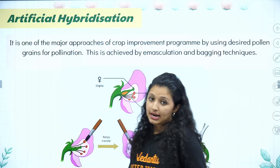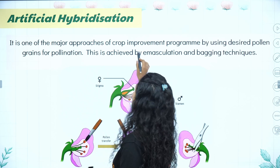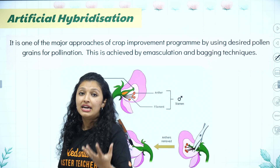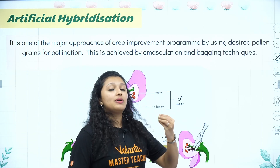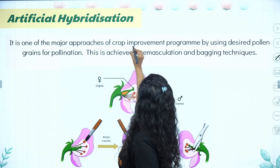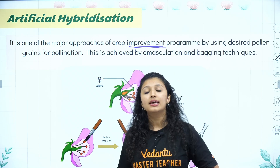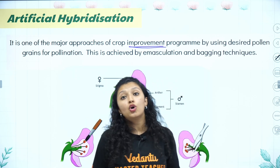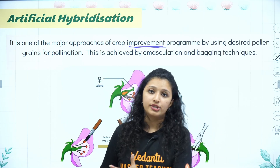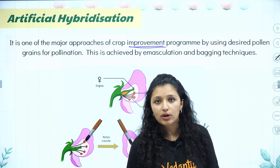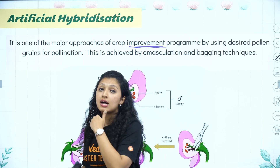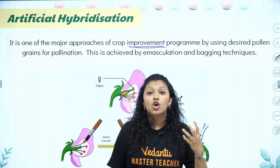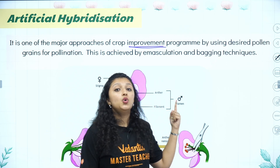Artificial hybridization is one of the major approaches of the crop improvement program. We have existing characters, and improvement can be of any character. For example, a plant producing seeds in a limited amount — maybe you're getting 100 kilograms, but with a good variety, you can get 200 or 500 kilograms. We have been doing artificial hybridization for crop improvement using conventional methods.